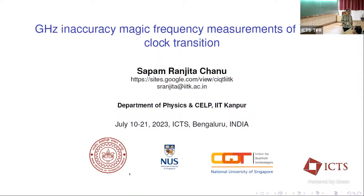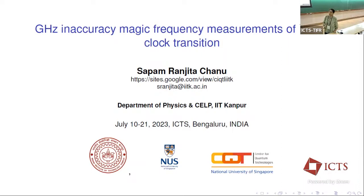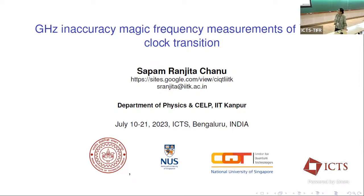People looking to work on this kind of project are welcome. The title of today's talk is 'Gigahertz accuracy measurements' — meaning the measurement of the magic frequency where the Stark shift in the excited and ground state is equal. This is the barium ion clock transition from S-1/2 to D-5/2, which has a lifetime of 30 seconds. I will be using a single trapped barium ion to do this frequency measurement.